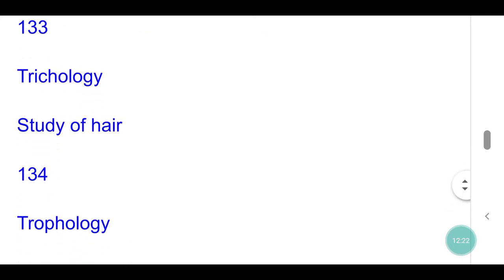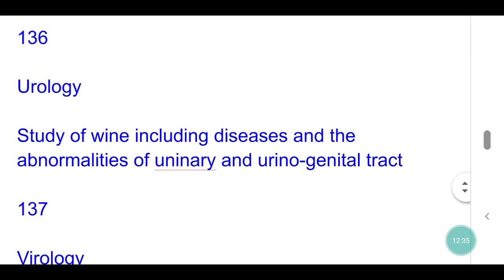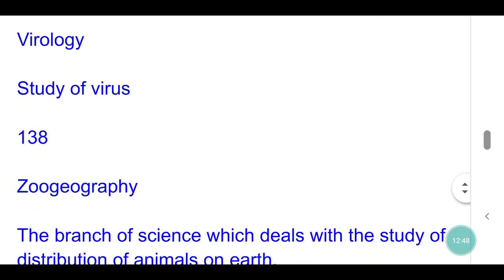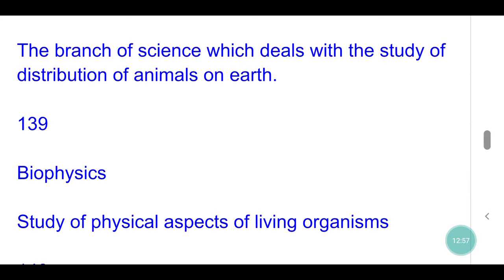Trichology: study of hair. Trophology: study of nutrition. Urobiology: study which deals with preservation of the body in liquids by chemicals. Urology: study of urinary system including diseases and abnormalities of urinary and urinogenital tract. Virology: study of viruses. Zoogeography: the branch of science which deals with the study of distribution of animals on earth. Biophysics: study of physical aspects of living organisms.